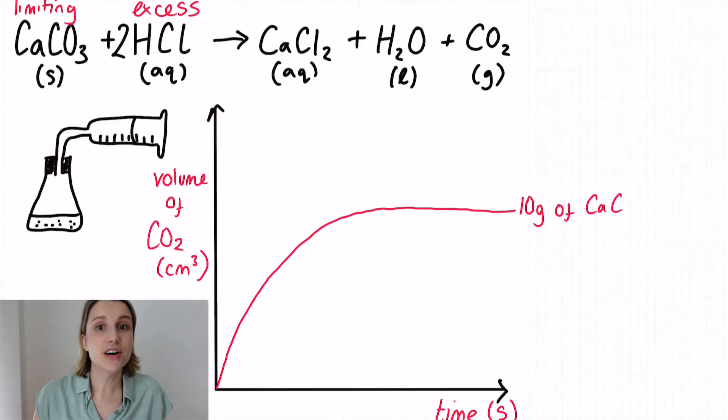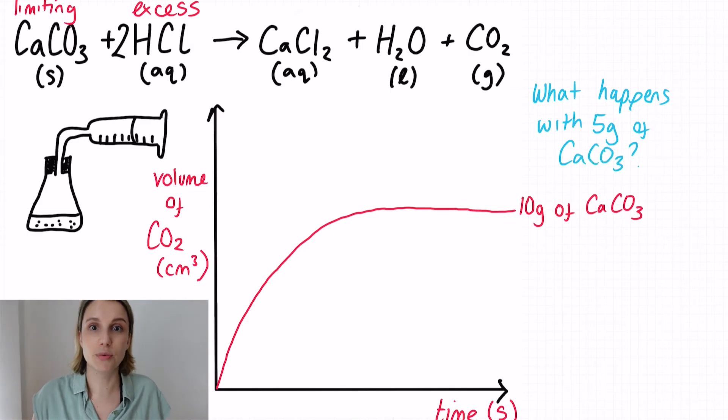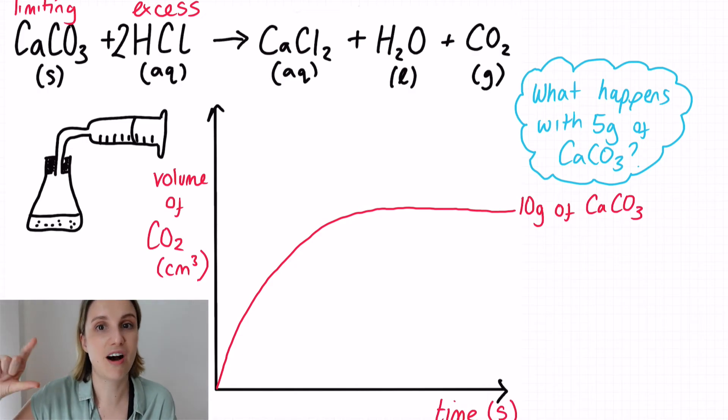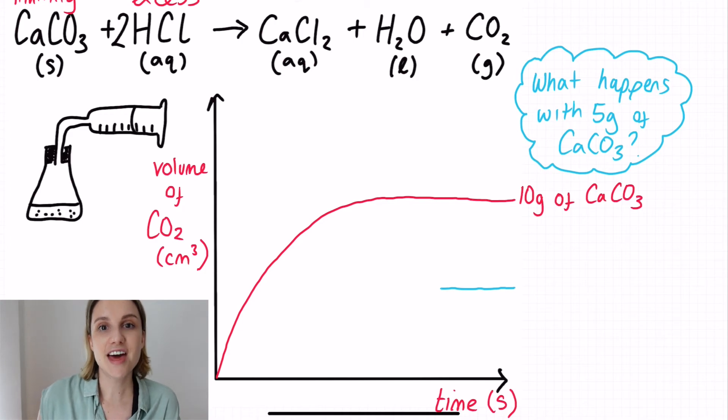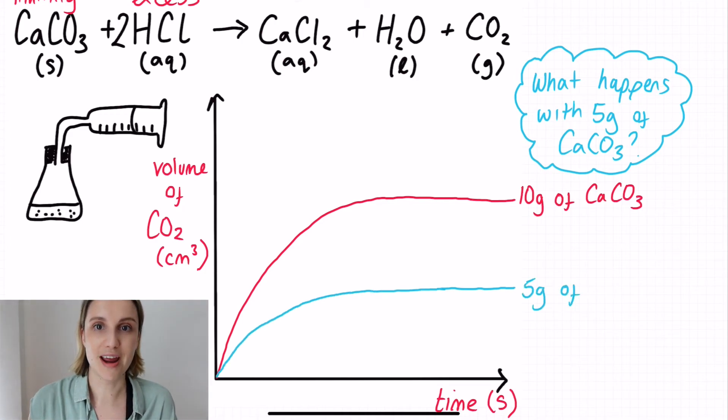If I say that my first reaction, the one I did originally, was with 10 grams of calcium carbonate, the question might ask, what do you predict the shape of the graph will look like if I were to do the same reaction with 5 grams of calcium carbonate? Now, if I've only got 5 grams of it, this means that I can only possibly make half the volume of carbon dioxide that I had to start with. So I'm going to draw the line where approximately halfway is on this graph, and then I'm going to connect the two with our general shape of rate of reaction graphs.